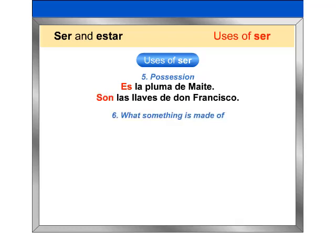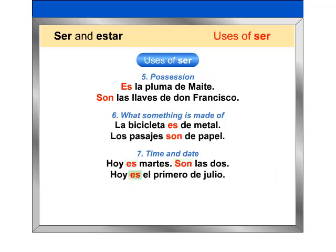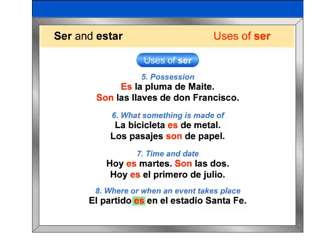6. What something is made of: La bicicleta es de metal. Los pasajes son de papel. 7. Time and date: Hoy es martes. Son las dos. Hoy es el primero de julio. 8. Where or when an event takes place: El partido es en el Estadio Santa Fe. La conferencia es a las 7.